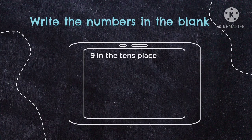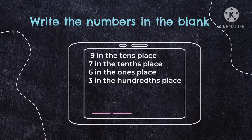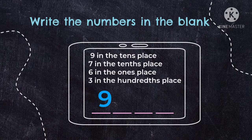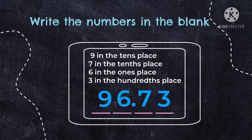Next: 9 in the tens place, 7 in the tenths place, 6 in the ones place, and 3 in the hundredths place. Since there is a tens place, the whole number is 2 digits, making it a 4-digit decimal number. We place 9 in the tens place, 6 in the ones place, decimal point, 7 in the tenths place, and 3 in the hundredths place. So the decimal number formed is 96.73 — 96 and 73 hundredths.